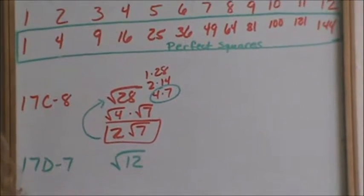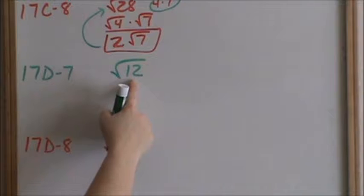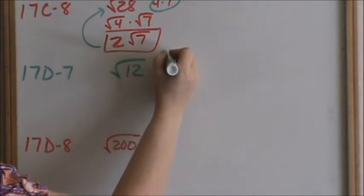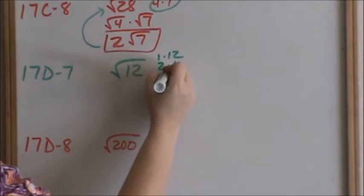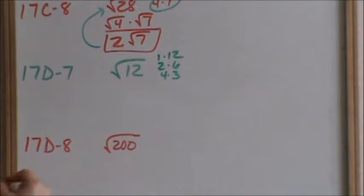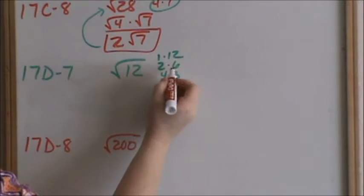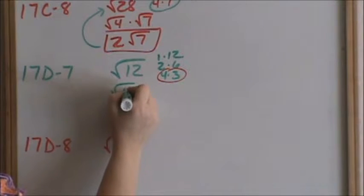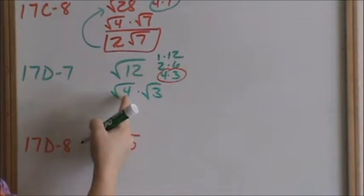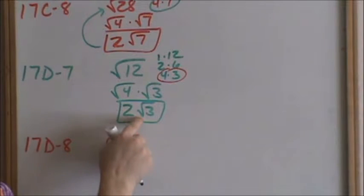Now let's move on to number 7: square root of 12. The very first thing you want to do for any problem to simplify a radical is to determine the factors of that number. The factors of 12 are 1 and 12, 2 times 6, and 4 times 3. Out of all those numbers, we are looking for a perfect square. 4 is the perfect square, so we want to use that set of factors. So square root of 12 is the same thing as square root of 4 times square root of 3. Square root of 4 is 2, and square root of 3 cannot simplify anymore. So square root of 12 is the same thing as 2 times square root of 3.